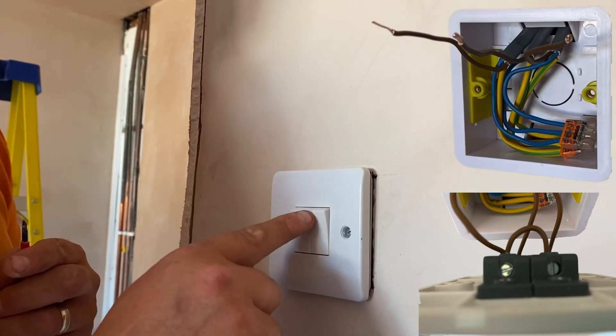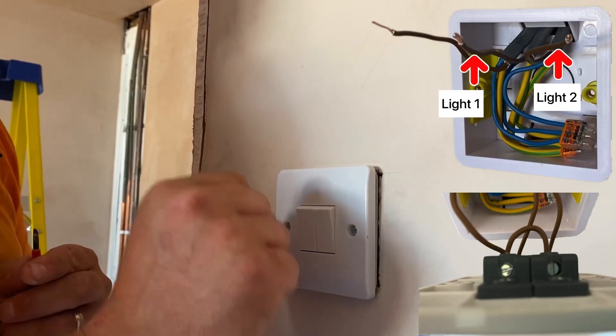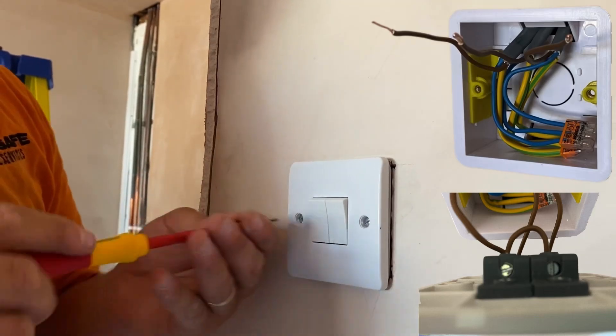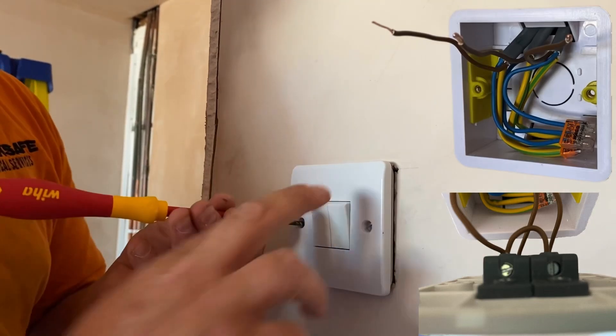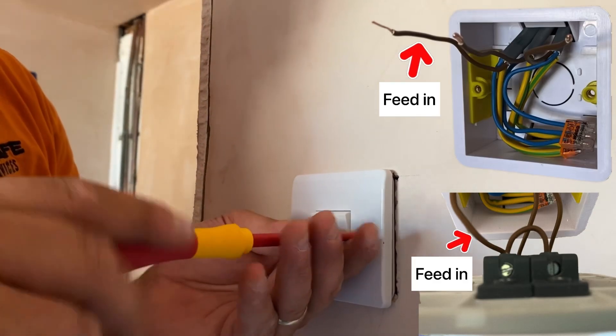And then what we've done here, we could have actually doubled up both switching lines into the L1, and then that would have allowed both to work on one switch. However, the customer decided to have a two gang switch. Therefore, we had to bridge across the top, so we have permanent feed in, and then we have a switching line of neutral, switching line of neutral going out.